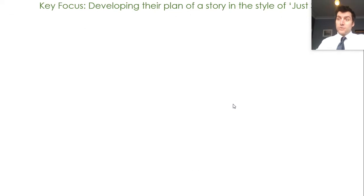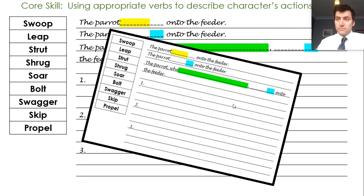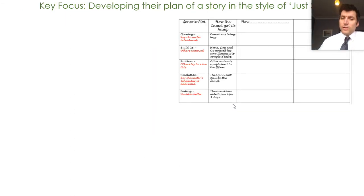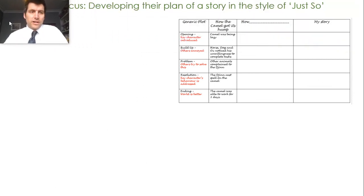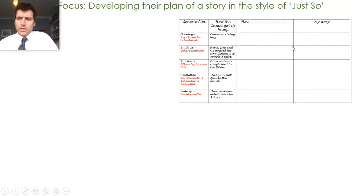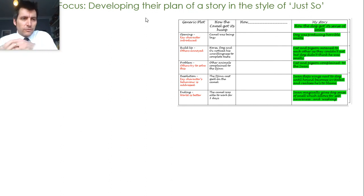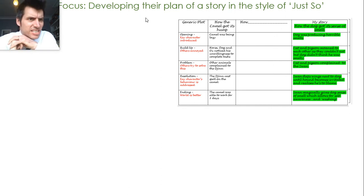Once you've done that, we're going to move on to planning our story. Pause your video if you haven't finished, but do this first. Last week we looked at some stories, and in that third column where it says 'how,' you summarized one of our just-so stories and thought about what your own story was going to be. The idea was to use the generic plot from the first column to think about what your story would be. My story was going to be how the dog got its sense of smell.